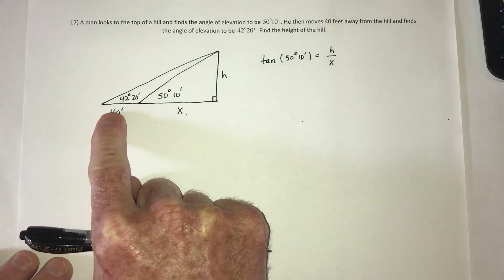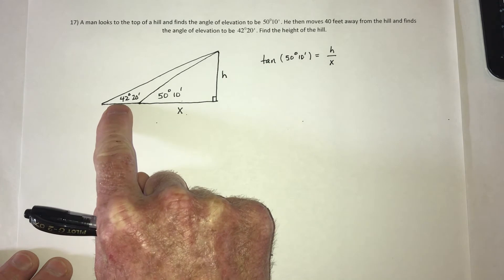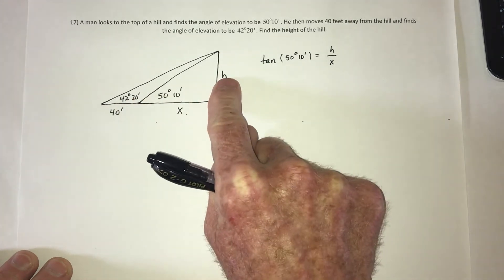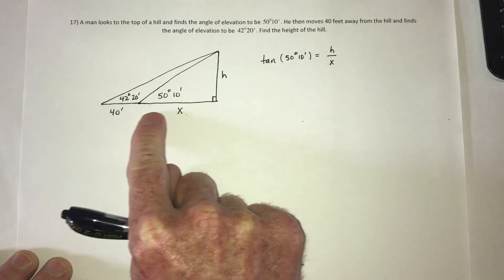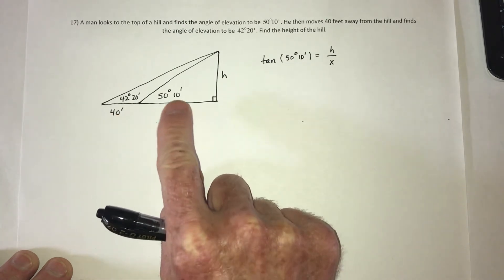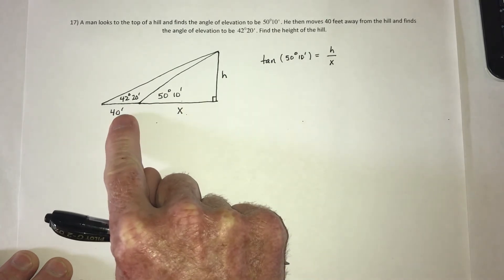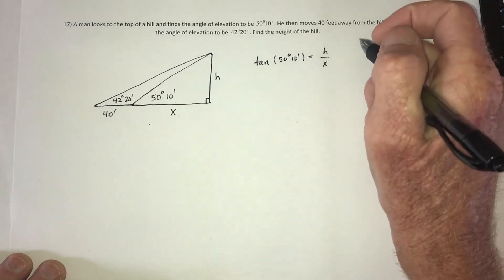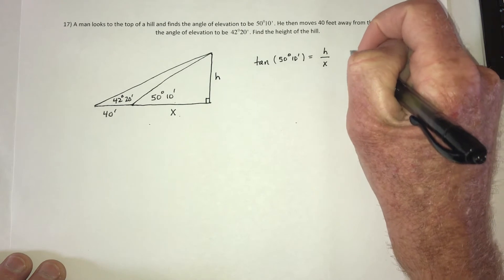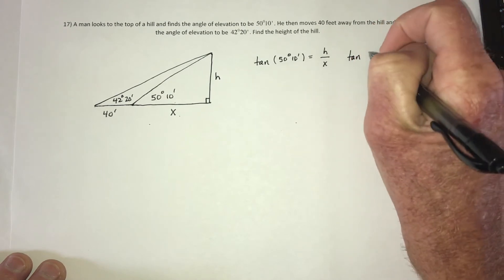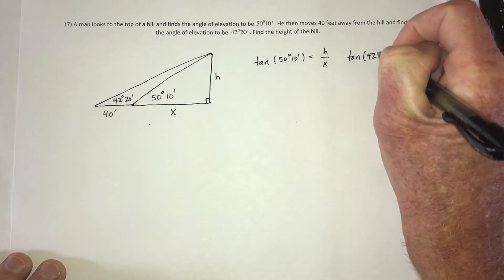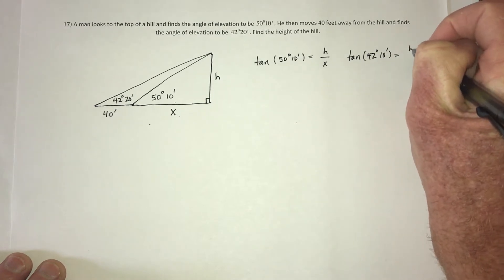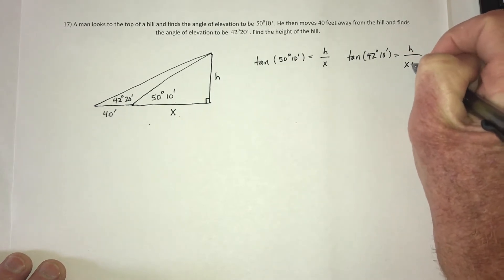Okay, now use this one. So this will be the angle, the 42 degrees, 20 minutes. This is opposite. And then adjacent would be this whole side right here, which would be x plus 40. So the other equation would look like tangent of 42 degrees, 10 minutes, equals h over x plus 40.